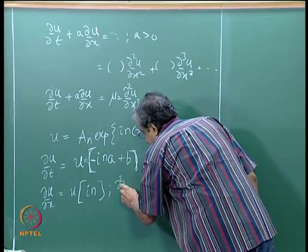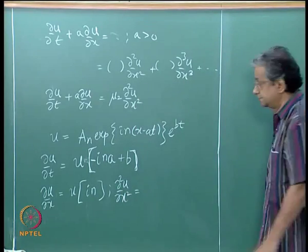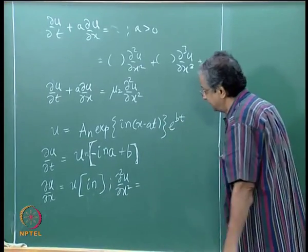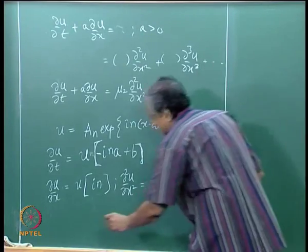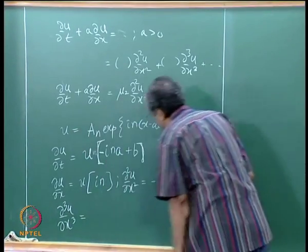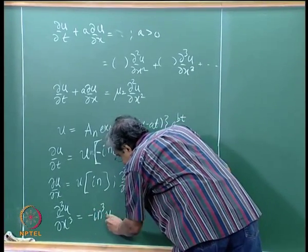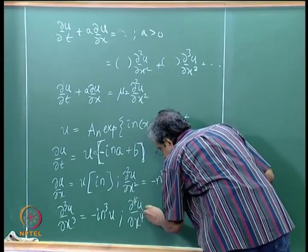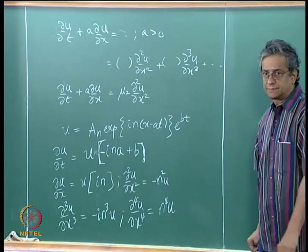What is ∂²u/∂x²? Every differentiation with respect to x gives you an i·n, so that becomes -n²·u. Then ∂³u/∂x³ gives i·n times that, which is -i·n³·u, and finally ∂⁴u/∂x⁴ is n⁴ times u.